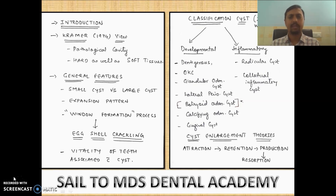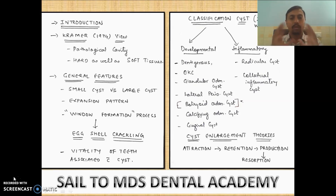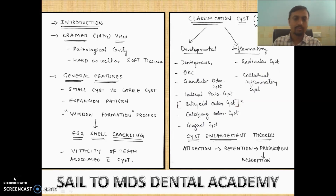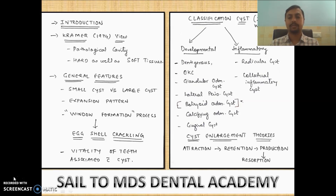What is Cramer's definition? There are many definitions given for cysts by Ky, WHO, and others, but the most suitable definition is given by Cramer. He said a cyst is a pathological cavity that may consist of gas, fluid, or semi-fluid. A cyst can occur in either hard or soft tissue. An example of soft tissue is the nasal alveolar cyst, mentioned in previous videos, or developmental cysts that mostly occur in soft tissue.